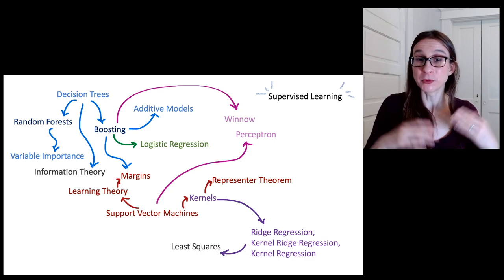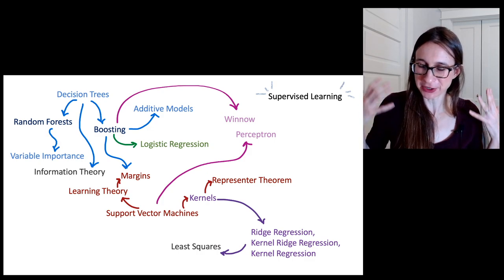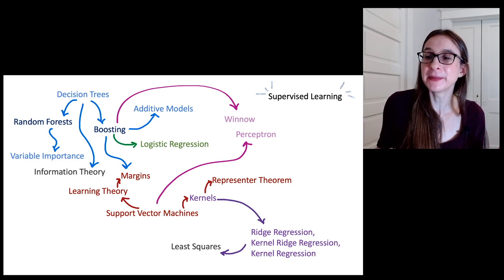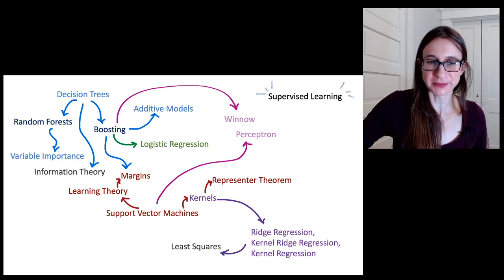These algorithms are the Winnow and Perceptron algorithms. These are online learning algorithms. The data come one at a time, and then you adjust your decision boundary.